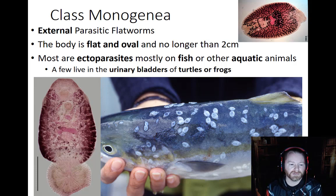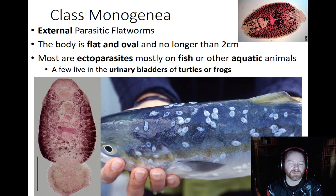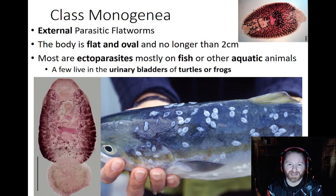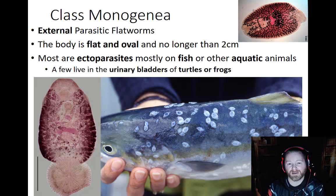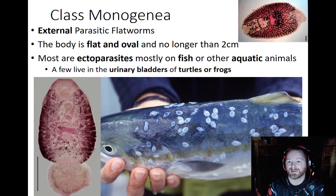The term we use for a parasite that's external is ectoparasite — ecto meaning on the outside. But some species actually live on the inside of frogs and turtles, getting into the urinary bladder where they feed off their host. Remember the rule of being a good parasite is to not kill your host. A parasitoid will kill its host, but a parasite needs to make sure its host stays alive because that's its food source.